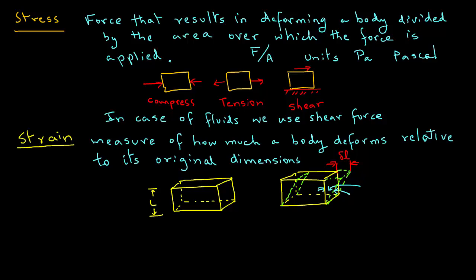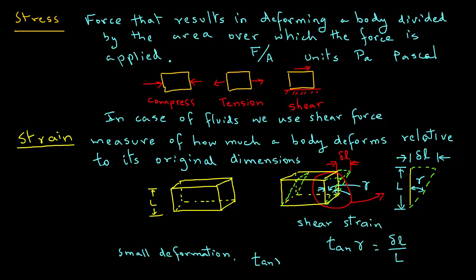So the shear strain is the angle that is formed due to bending, and we call that shear strain tangent gamma because tangent gamma is delta L over L. For small deformations, we can say that tangent gamma equals gamma, or gamma is equal to delta L over L. So that is the measure of strain in case of a solid body.